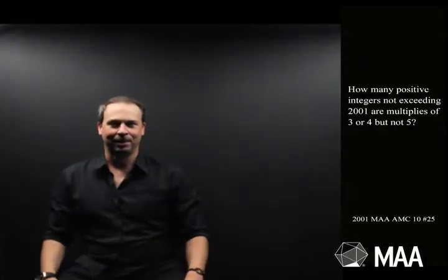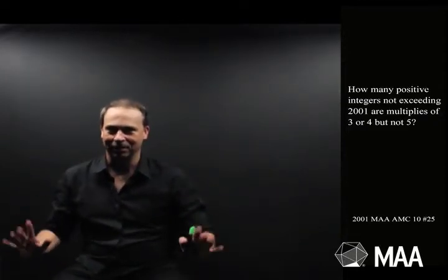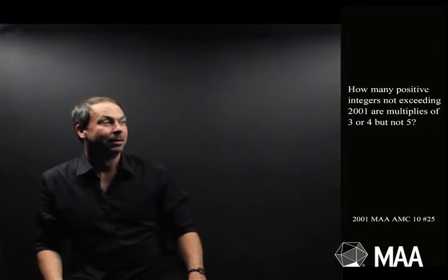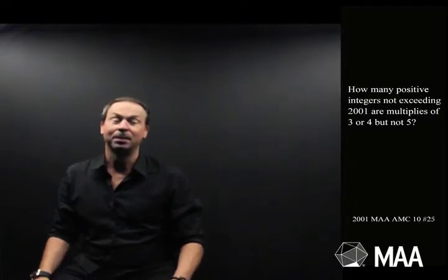G'day! Welcome to another Curriculum Burst. Here's a surprisingly tricky, innocent-looking question for high schoolers, and it goes as follows. How many positive integers not exceeding 2001 are multiples of 3 or 4, but not of 5?